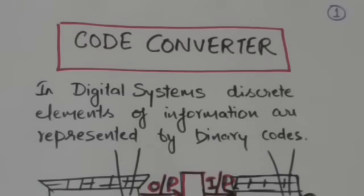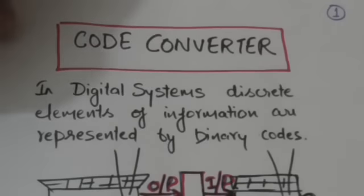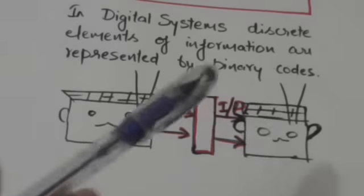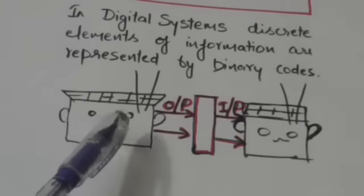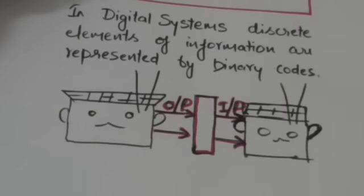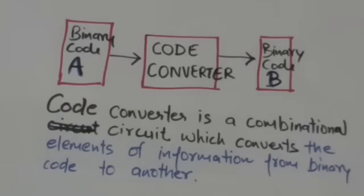Hello friends, welcome back. In this tutorial we will study about code converters in digital systems. Discrete elements of information are represented by binary codes. A number of binary codes are available, so different digital systems may use different binary codes to represent the same elements of information. If two digital systems use different binary codes and the output of one is the input of another, we need a code converter.